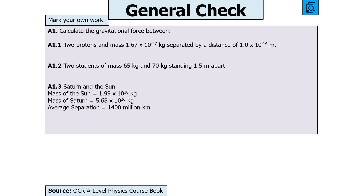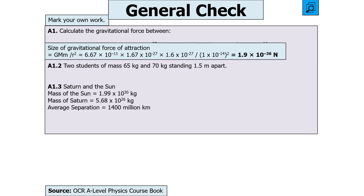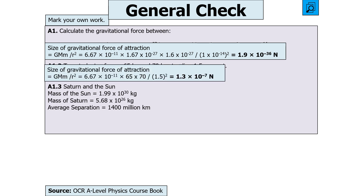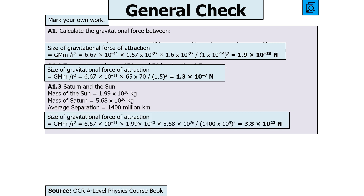Again, using Newton's law of gravitation F = GMM/R². For the protons, pop in all the values — remember it's R squared — and you get 1.9 × 10⁻³⁶ N. For the students, pop in the values to get 1.3 × 10⁻⁷ N. For Saturn and the Sun, remember the separation is given in kilometres, so convert to metres: it's 1,400 × 10⁹ m. The answer is 3.8 × 10²² N.